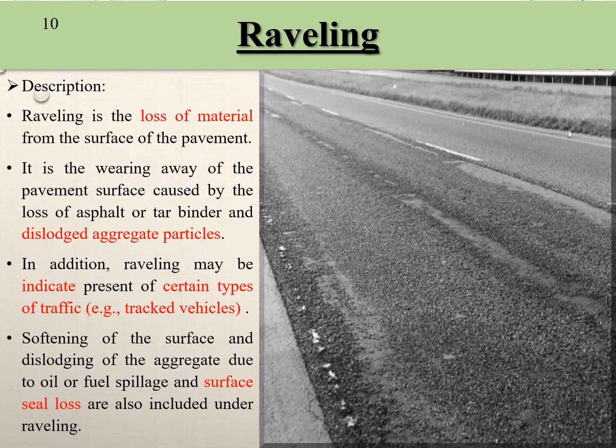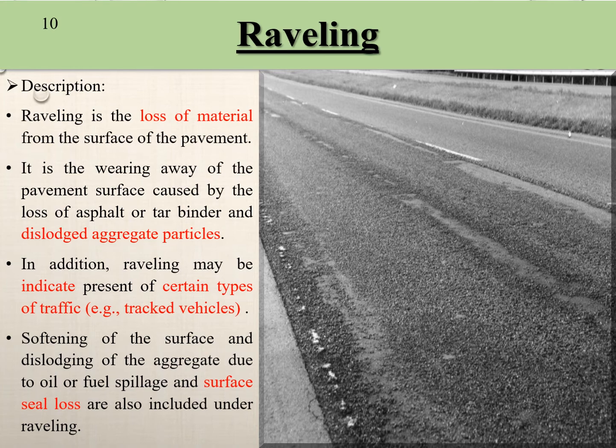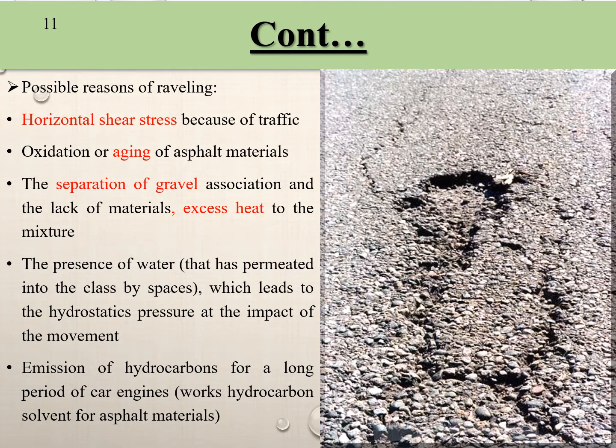In raveling, mainly loss of material from the surface is found. It particularly indicates tracked vehicle type traffic, in which surface seal material is lost, causing raveling type defects. It is particularly caused by aging of asphalt material and separation of gravel, especially in summer conditions when excess heat exists.